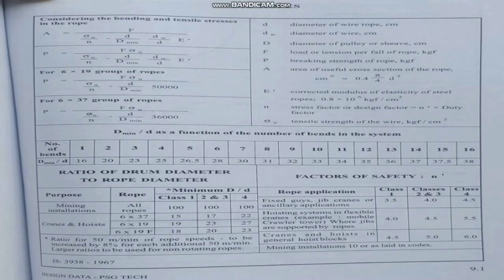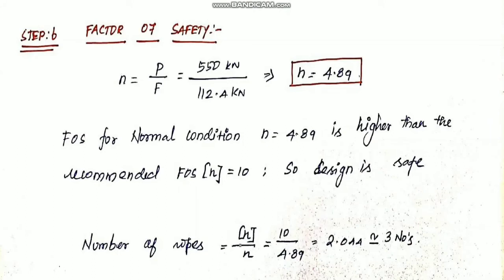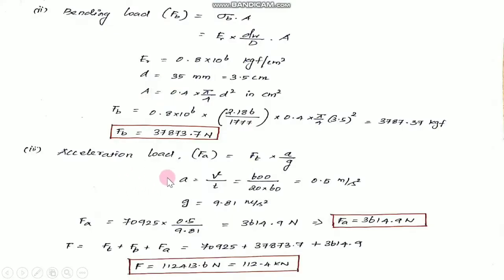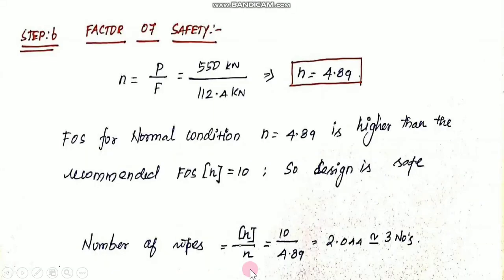Step 6 (last step): factor of safety check. Factor of safety n = P / F_O, where P is the design load (ultimate strength) and F_O is the total effective load combining acceleration, bending, tension, and tangential forces. Calculated factor of safety = 10 / 4.89 = 2.044, rounded to approximately 2. This gives the number of ropes required.